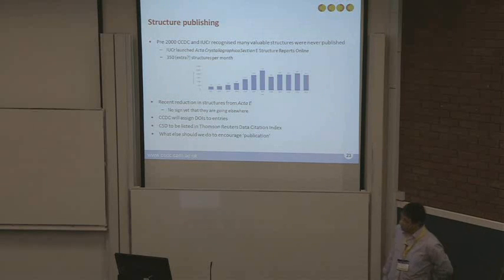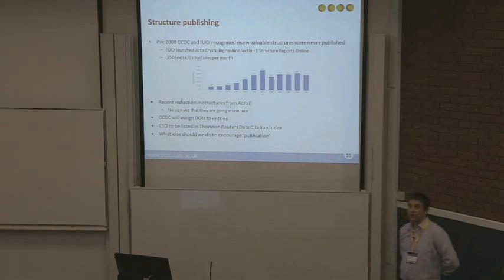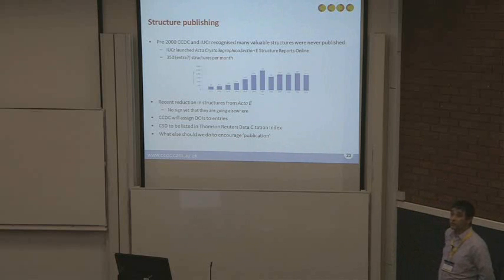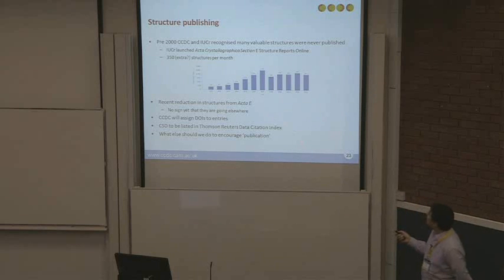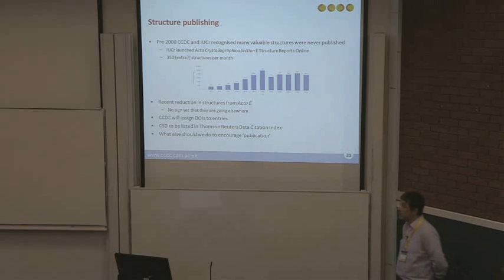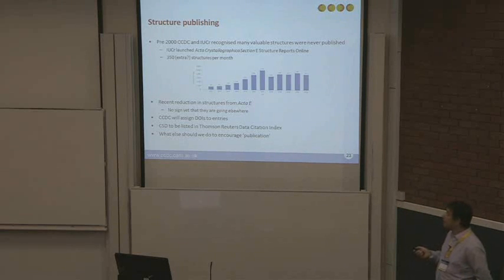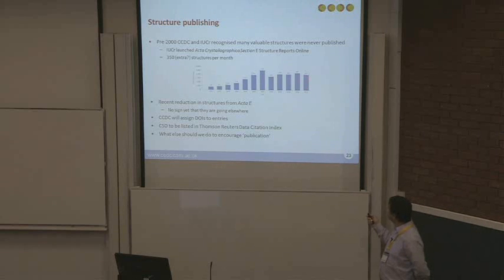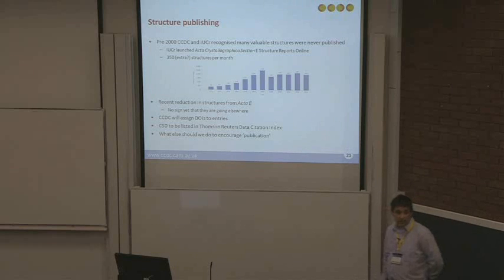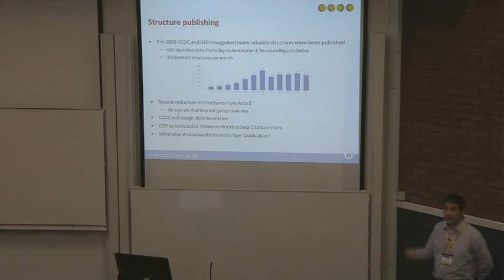We'd also like to encourage more depositions. We get about 50,000 structures per year, but that's a very small fraction of the number of structures that are actually determined. Both the CCDC and the IUCr recognised this some time ago. The IUCr launched Acta Crystallographica, a place for high-quality crystal structure determinations to be published. For the past five years or so, we've got around 350 structures in the CSD from Acta per month. This has really dropped off for 2013, relating to Thomson Reuters no longer issuing impact factors for Acta Crystallographica. The number will be significantly reduced for 2012 and 2013. We've seen no sign that other publications are taking up those structures, so the likelihood is they're being lost to science.